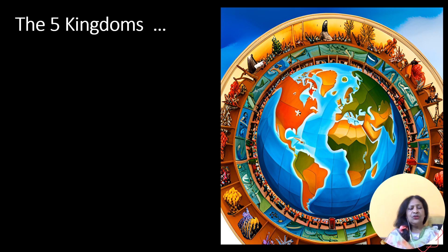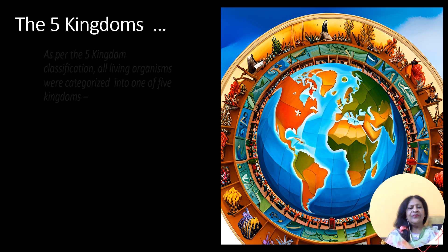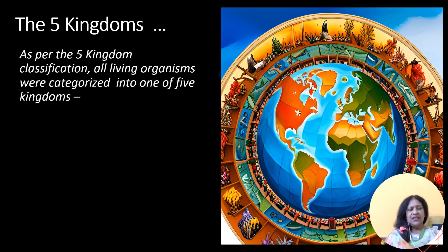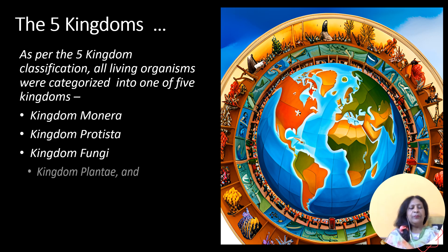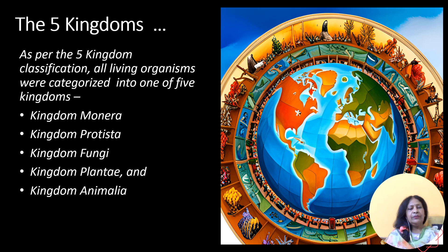Based on the above criteria, Patacker categorized the living world under five distinct kingdoms: Kingdom Munera, Kingdom Protista, Kingdom Fungi, Kingdom Plante, and Kingdom Animalia.